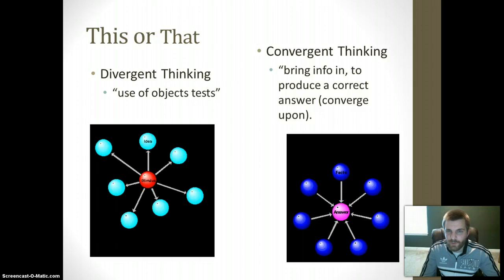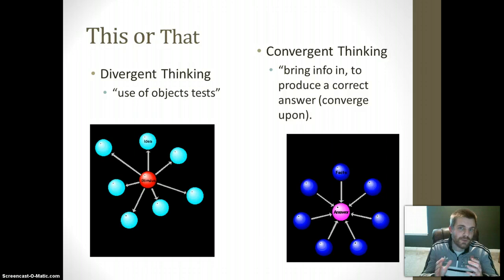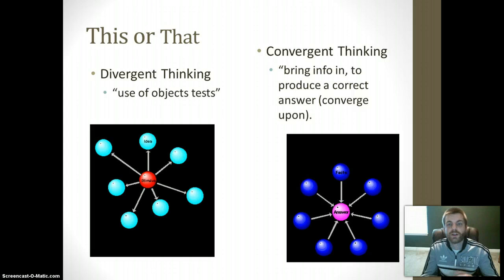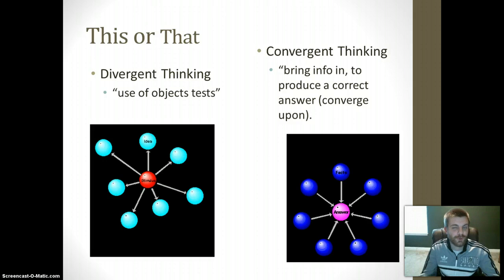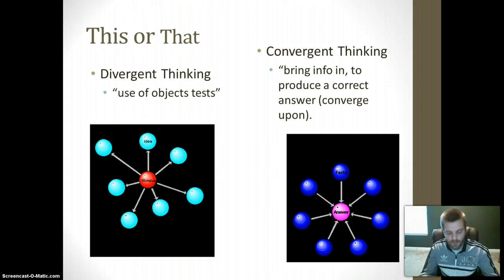Divergent thinking is about taking an idea or object and expanding upon it. For example, in a use-of-object test with a screwdriver, you think of multiple uses — it can serve as a pendulum or as a screwdriver to screw in a screw. Convergent thinking, on the other hand, is when you bring information together to produce a single correct answer. This is sometimes a strategy used for multiple choice questions — when you kind of know an answer, you use elimination or convergent thinking to find the correct answer.